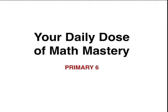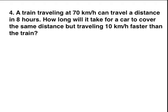The question says this: A train travelling at 70 km per hour can travel a distance in 8 hours. Now, how long will it take for a car to cover the same distance, but travelling 10 km per hour faster than the train? Now, this question is pretty simple and straightforward. So, let's do this together right now.